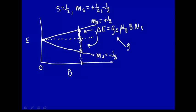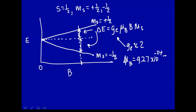G_E, as we said for Zeeman splitting, is approximately equal to 2 for just an unpaired electron in a molecule. The Bohr magneton beta is equal to 9.27 times 10 to the minus 24th joules per tesla. The magnetic field B is the experimental parameter, and M_S is the spin quantum number.